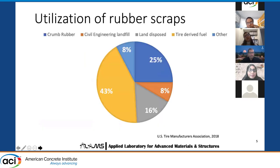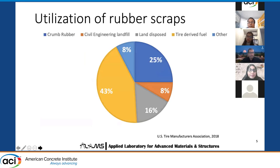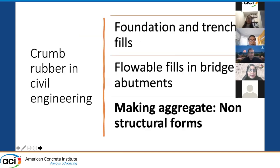According to the U.S. Tire Manufacturers Association, there are several utilizations of rubber scraps. The most of it — about 43% — becomes tire-derived fuel, and 25% becomes crumb rubber, and around 16% are disposed in landfills. These are the significant uses of crumb rubber. We are interested in using crumb rubber out of the rubber scraps.